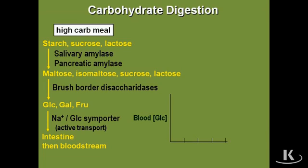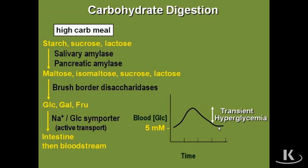Depending on how much of a high carbohydrate meal we eat, glucose will be pouring into the bloodstream. Let's discuss the glucose tolerance curve. On the y-axis is blood glucose concentration; on the x-axis is time. The basal level of glucose in the blood is 5 millimolar. If you eat a high carbohydrate meal, blood glucose starts to rise in a bell-shaped curve, reaches a maximum, then comes back down to normal at 5 millimolar — that is normal transient hyperglycemia.